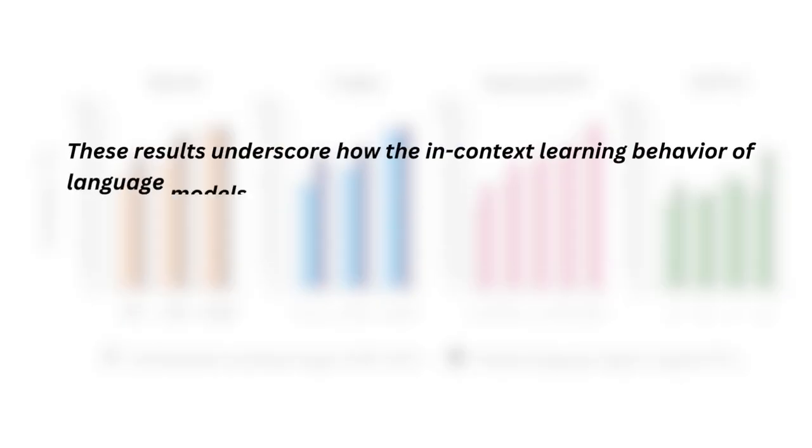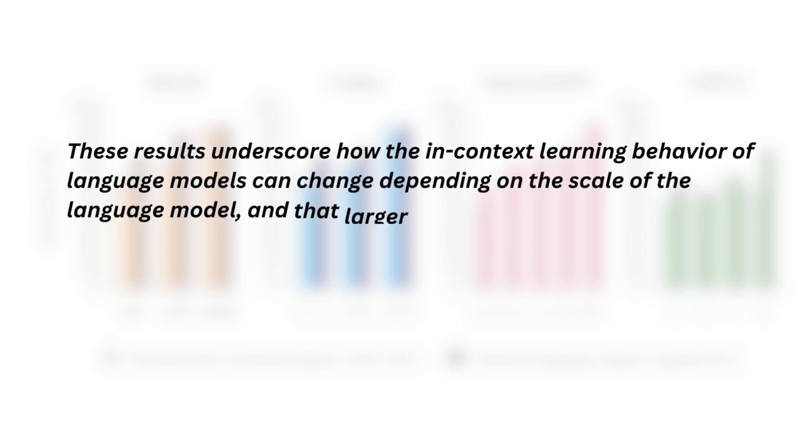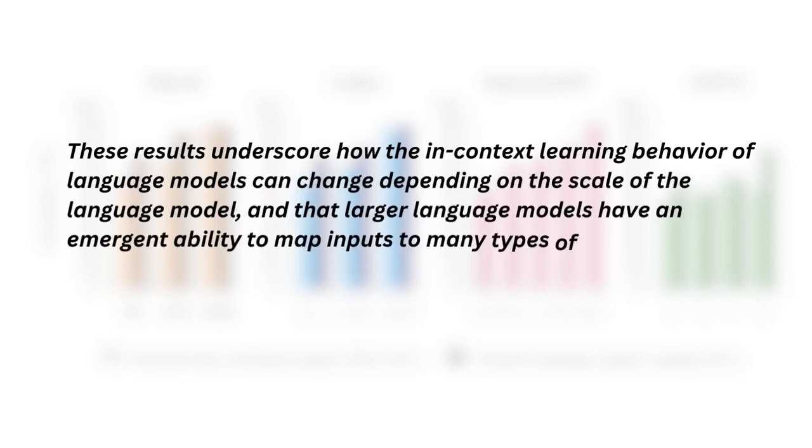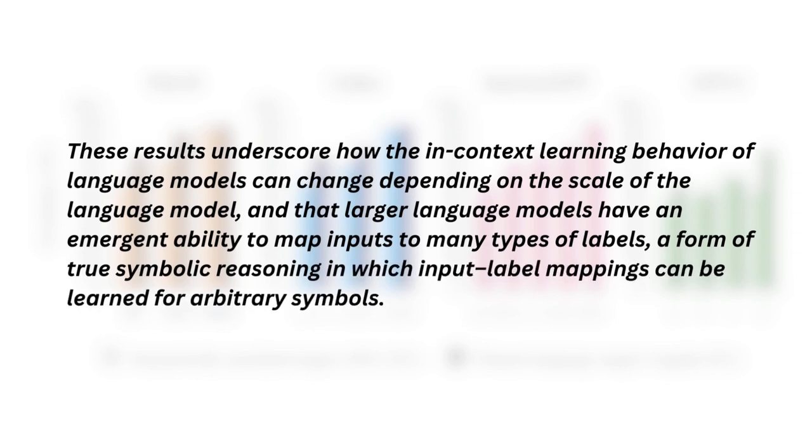The authors concluded with the following: These results underscore how the in-context learning behavior of language model can change depending on the scale of the language model, and that larger language models have an emergent ability to map input to many types of labels, a form of true symbolic reasoning in which input-label mapping can be learned for arbitrary symbols.